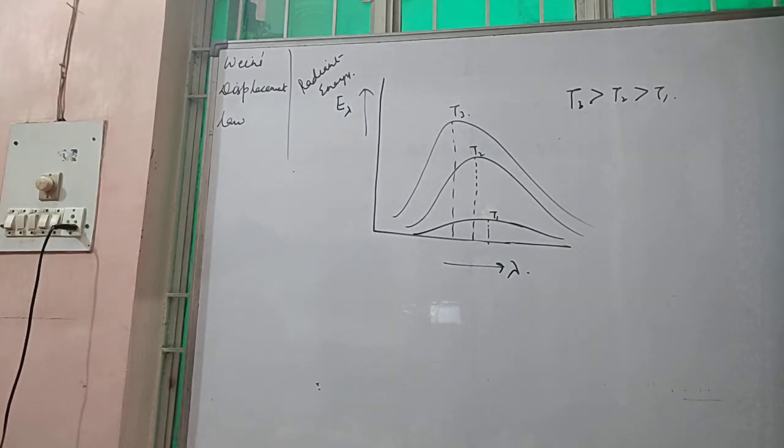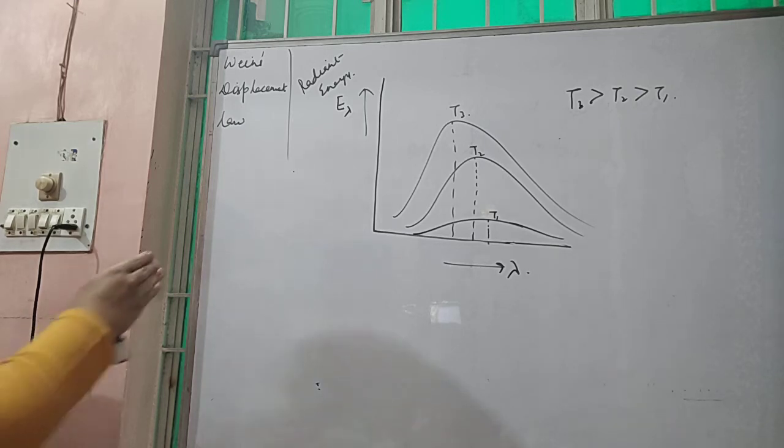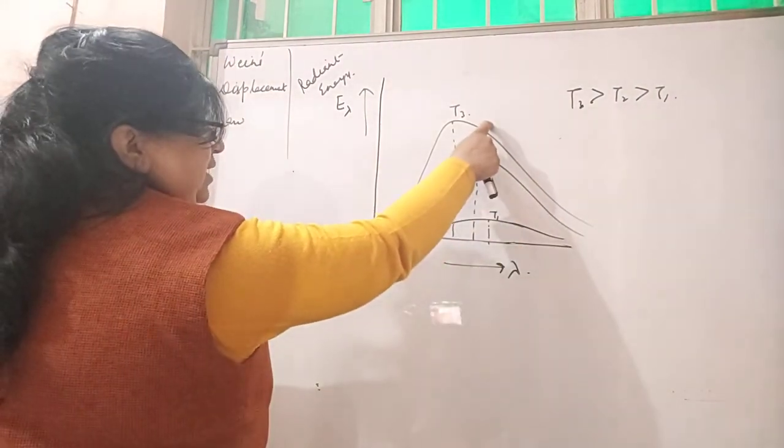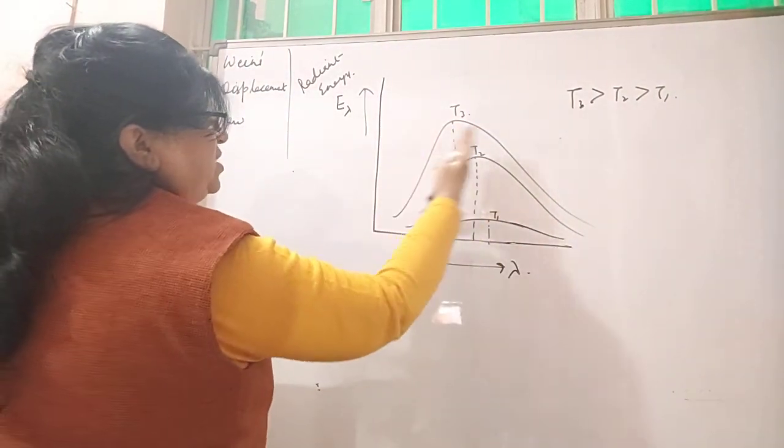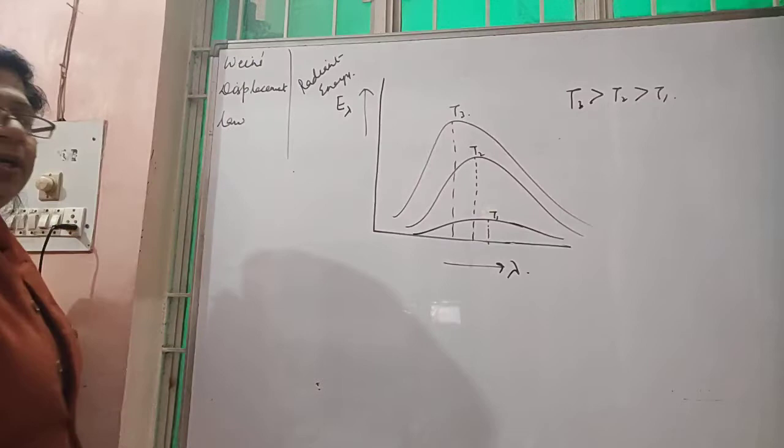So as the temperature of the black body rises, T3 is more than T2, it is more than T1, the peak of the distribution curve shifts towards the shorter wavelength. The wavelength will increase from here to here, as the temperature is increasing, the distribution curve is shifting towards the shorter wavelength.